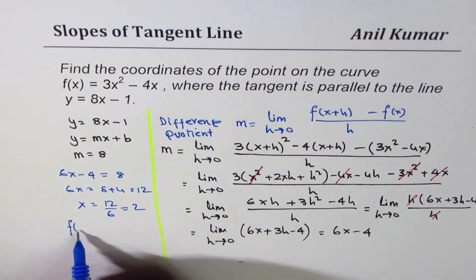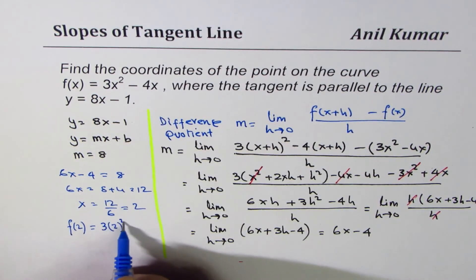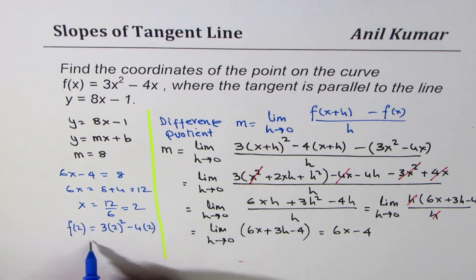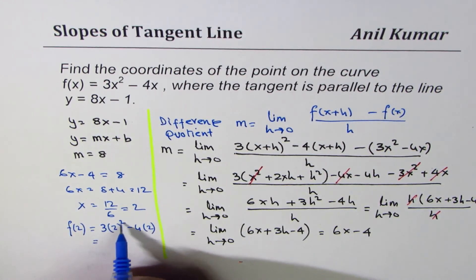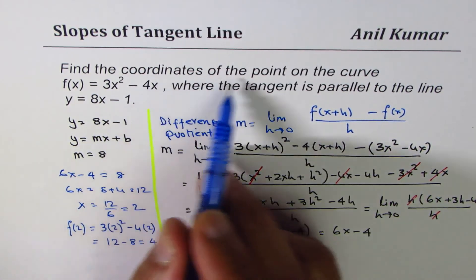Now find the y value. Substitute 2 in the equation: 3 times 2² minus 4 times 2. 2² is 4, 4 times 3 is 12 minus 8, that gives you 4. Therefore the coordinates for the point are x = 2 and y = 4.